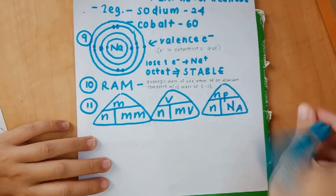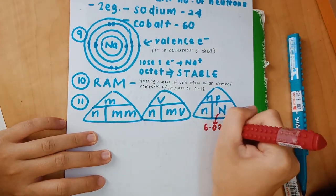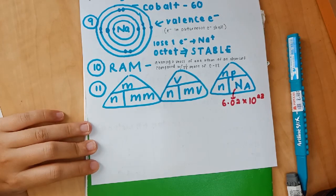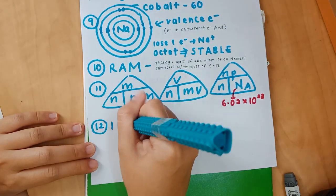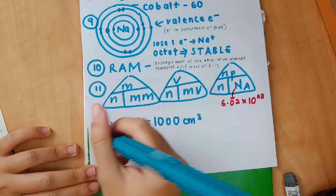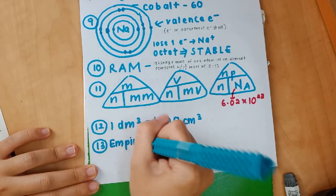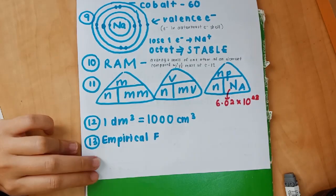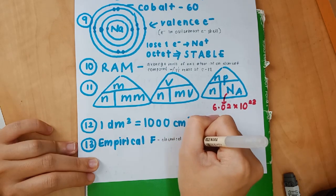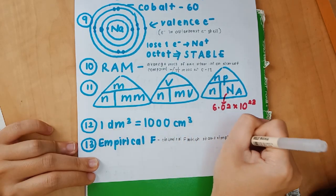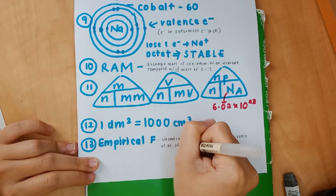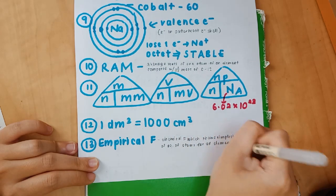Number 11: we have these three triangles which are super important and useful in converting mass to molar mass, volume to number of moles, stuff like that. I've already explained how to use this triangle in my How I Memorize Stuff video if you guys saw that. Number 12: 1 dm³ is 1000 cm³. Number 13: empirical formula definition is super important as well, so take note of this.